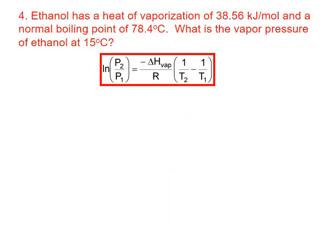For problem four, we're asked to find the vapor pressure of ethanol at 15 degrees Celsius, given the normal boiling point of ethanol of 78.4 degrees Celsius and a heat of vaporization of 38.56 kilojoules per mole. Again, we use the two-point form of the Clausius-Clapeyron equation.